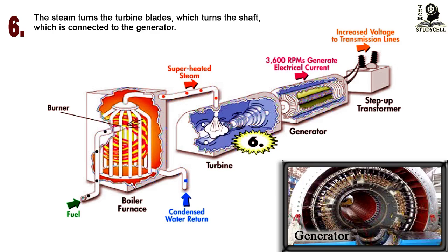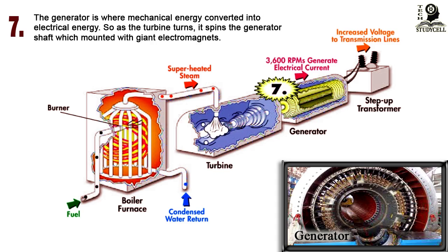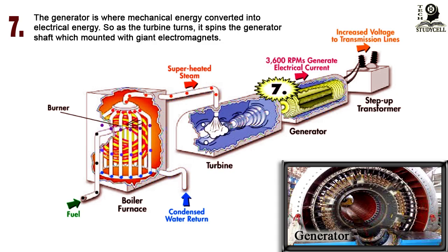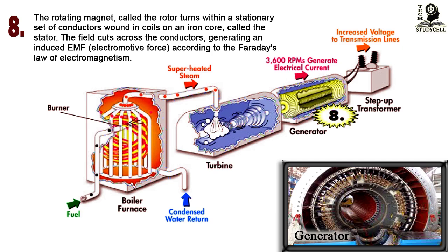As the shafts of the turbine and generator are mechanically coupled, as the turbine turns it spins the generator shaft, which is mounted with giant electromagnets. The rotating magnet, called the rotor, turns within a stationary set of conductors wound in coils on an iron core called the stator.